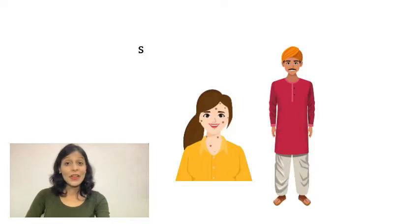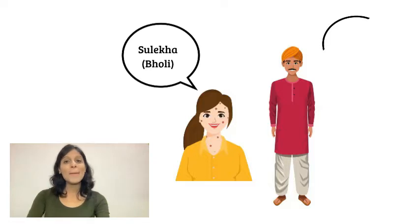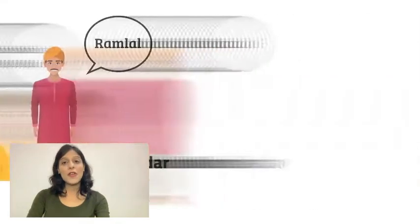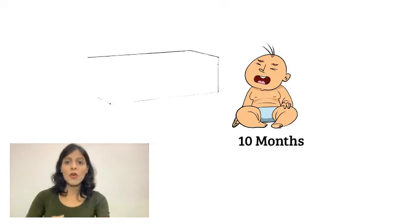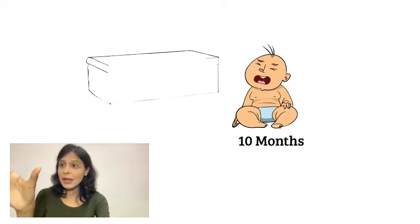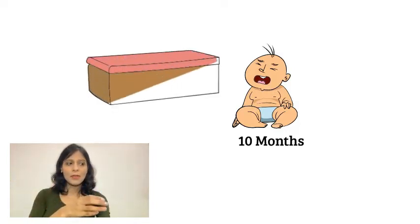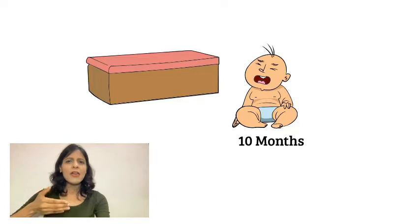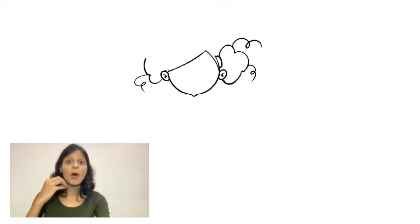Bholy was a special girl. Her real name was Sulekha and she was the fourth daughter of Ramlal, who was a lambardar — a person who collects revenue. When she was only 10 months old, she had fallen on her head from a cot, and this incident damaged some part of her brain, making her a slow learner. She also had an attack of smallpox at the age of two.